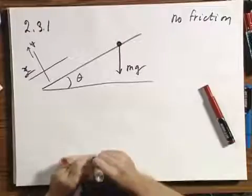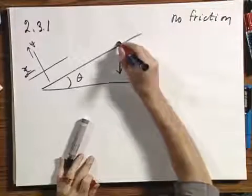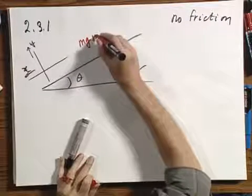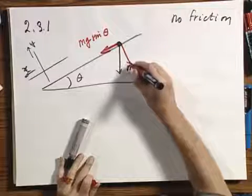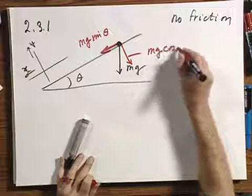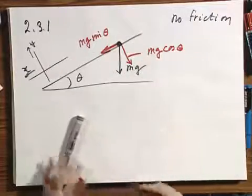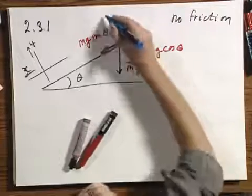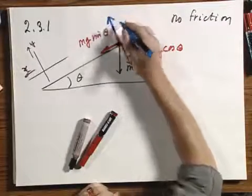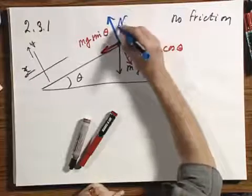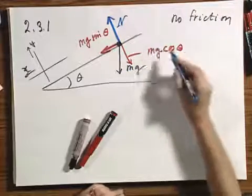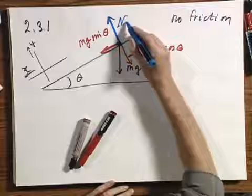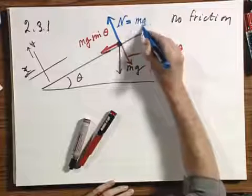I'm going to decompose gravity: in the x direction it is mg sine theta, and in the y direction it is mg cosine theta — of course in the negative direction. The plank has to push back in exactly that direction, call it n, in order to cancel out mg cosine theta. If these two didn't cancel out, there would be an acceleration in the y direction, which is not the case. Therefore, n must equal mg cosine theta.